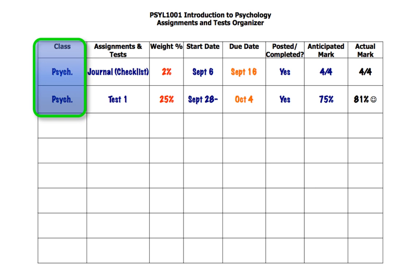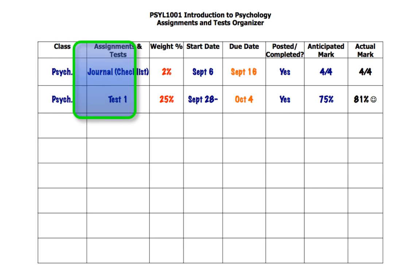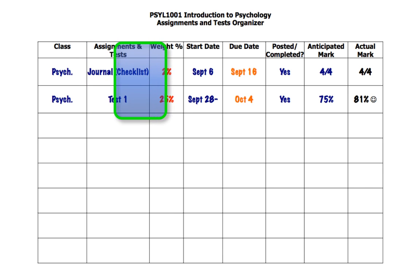In your left hand column, you put in what the class name is, and then next to that, what is the assignment or the test. And then it's useful to put in what the weighting is, because it helps you determine how important it is and what prioritization it might be.